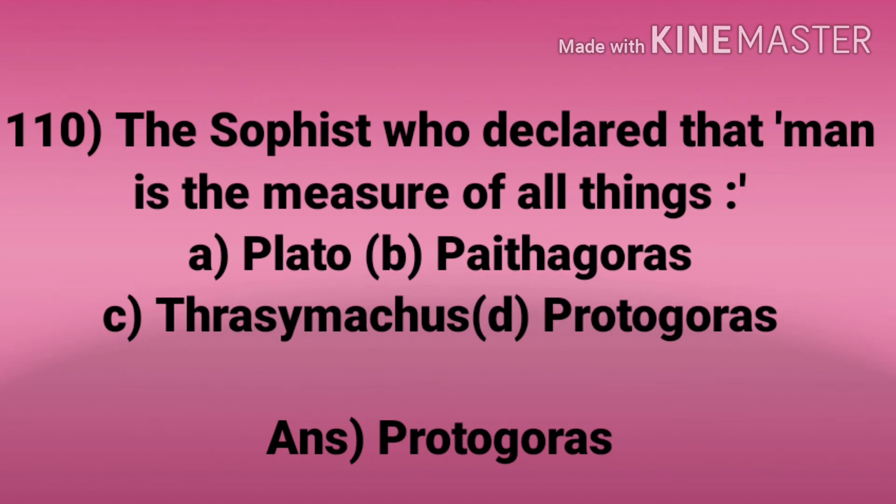Question 110. The sophist who declared that man is a measure of all things. Options: Plato, Pythagoras, Thrasymachus, Protagoras. Answer: Protagoras.